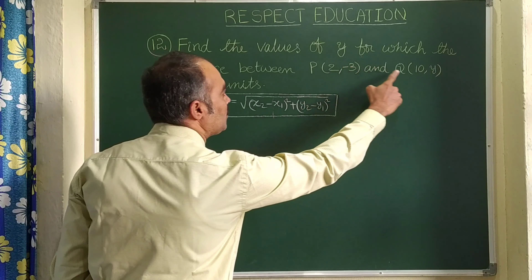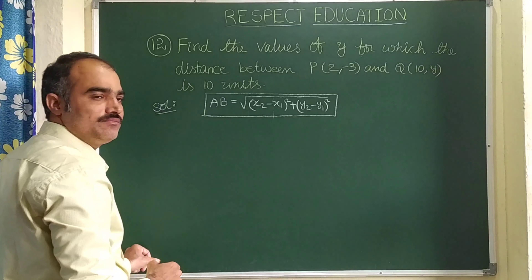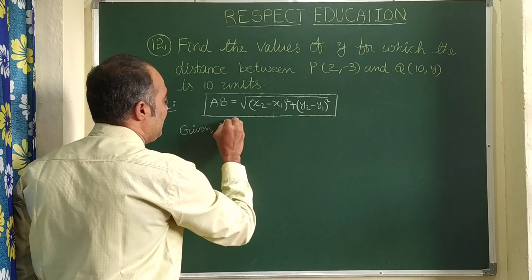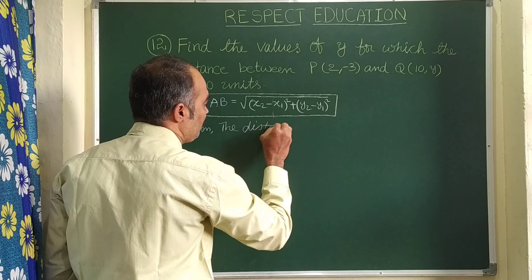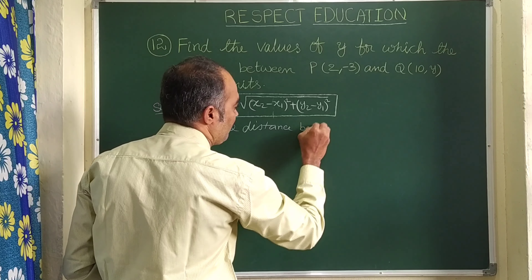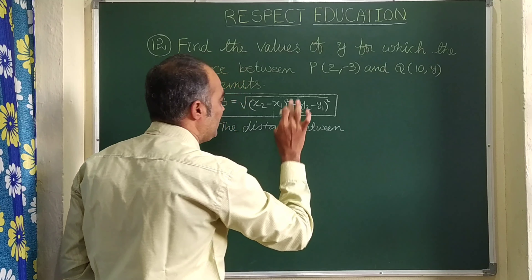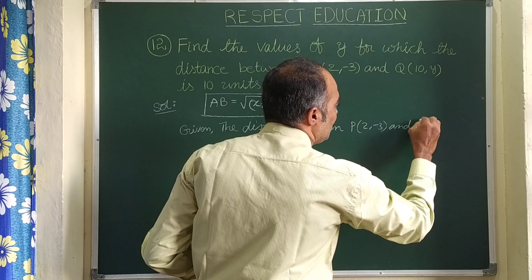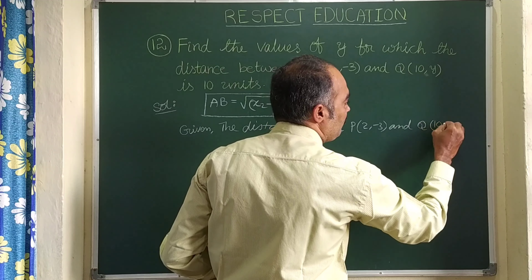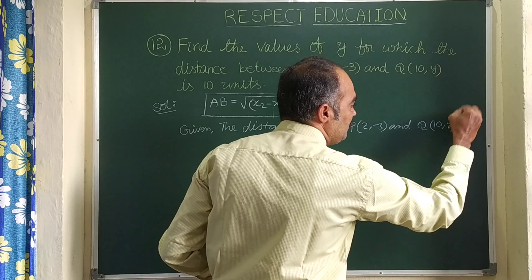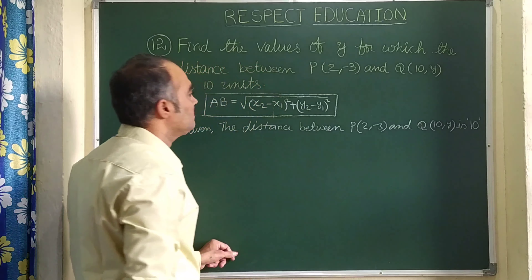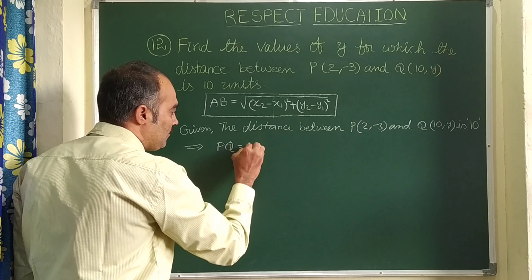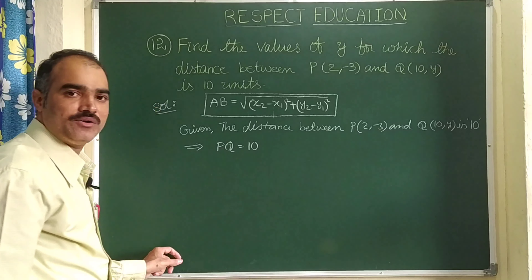Here, given the distance between P(2, -3) and Q(10, y) is 10 units. That means it can be written as PQ = 10 units.